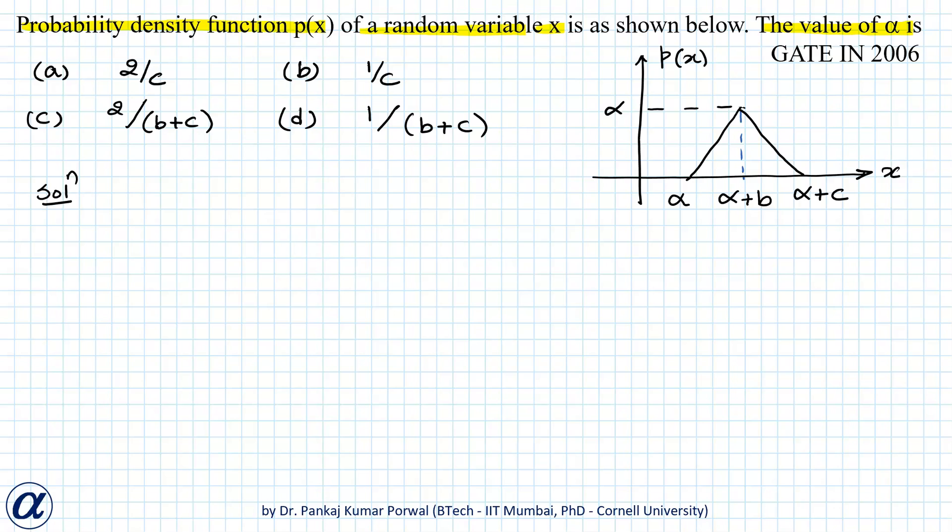We know that a function p(x) will be a probability density function if p(x) is always greater than or equal to zero and the integral from minus infinity to infinity of p(x)dx equals one. This statement basically says that the area under the p(x) curve should equal one.